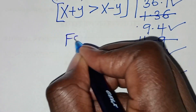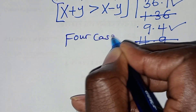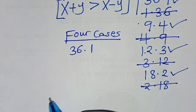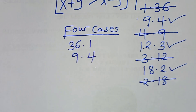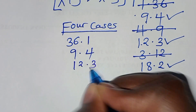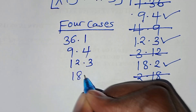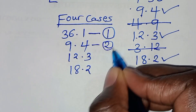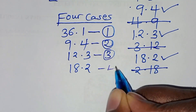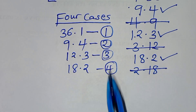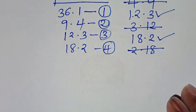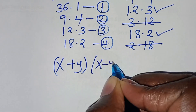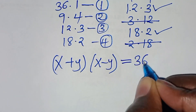So we have 4 valid cases here. Case 1 uses 18 times 2, case 2 uses 36 times 1, case 3 uses 9 times 4, and case 4 uses 12 times 3. Let's start with the first case: x plus y times x minus y equals 36 times 1.